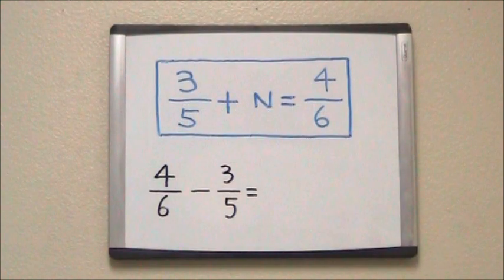To solve this problem, we could write it out horizontally and use the shortcut method. We take our two denominators, the 6 and the 5, multiply them together to get our common denominator of 30.